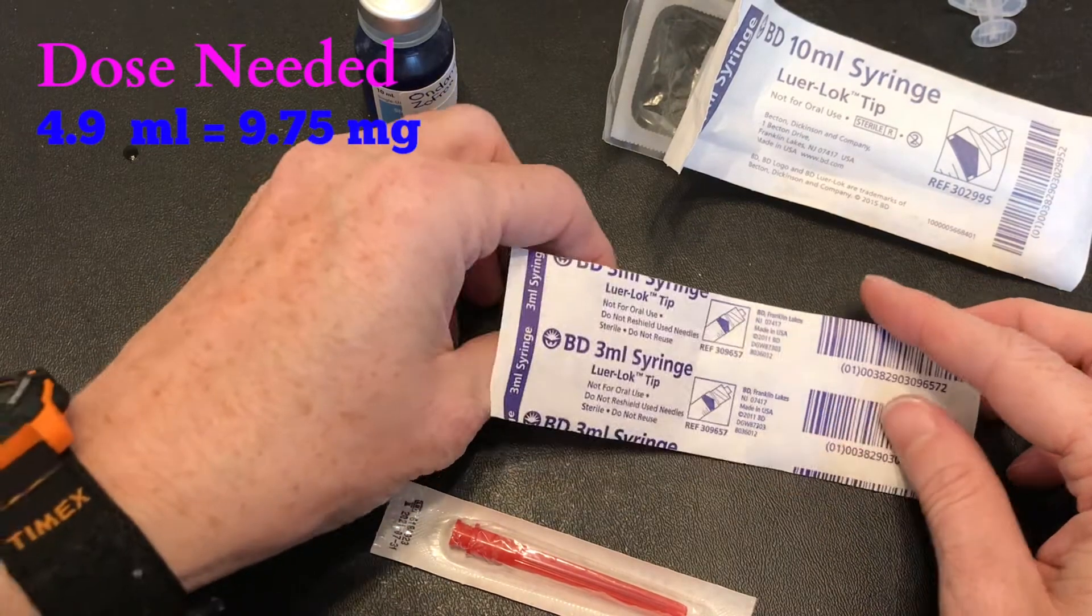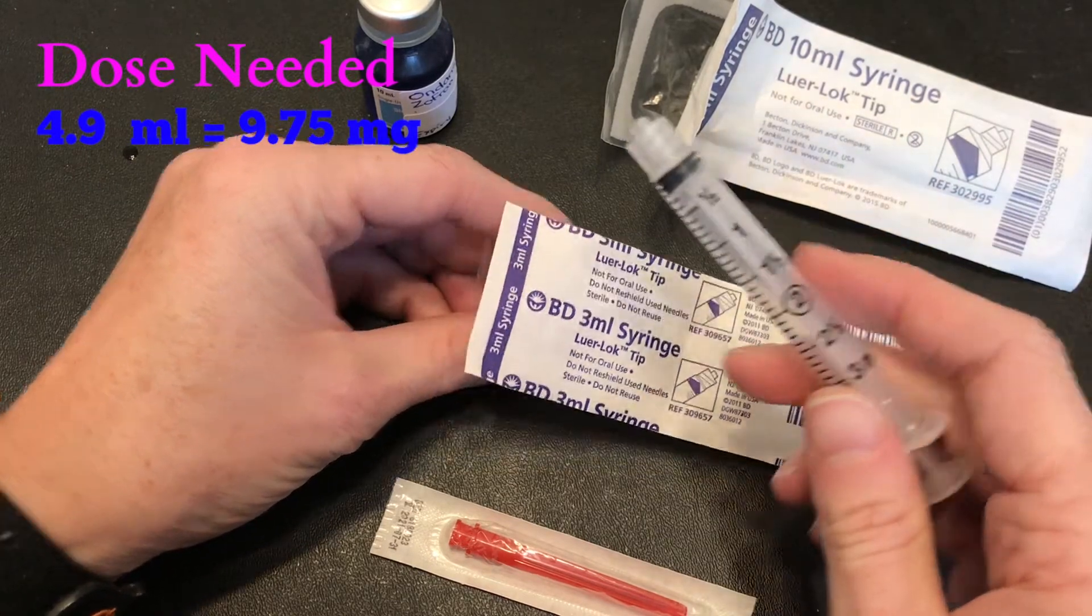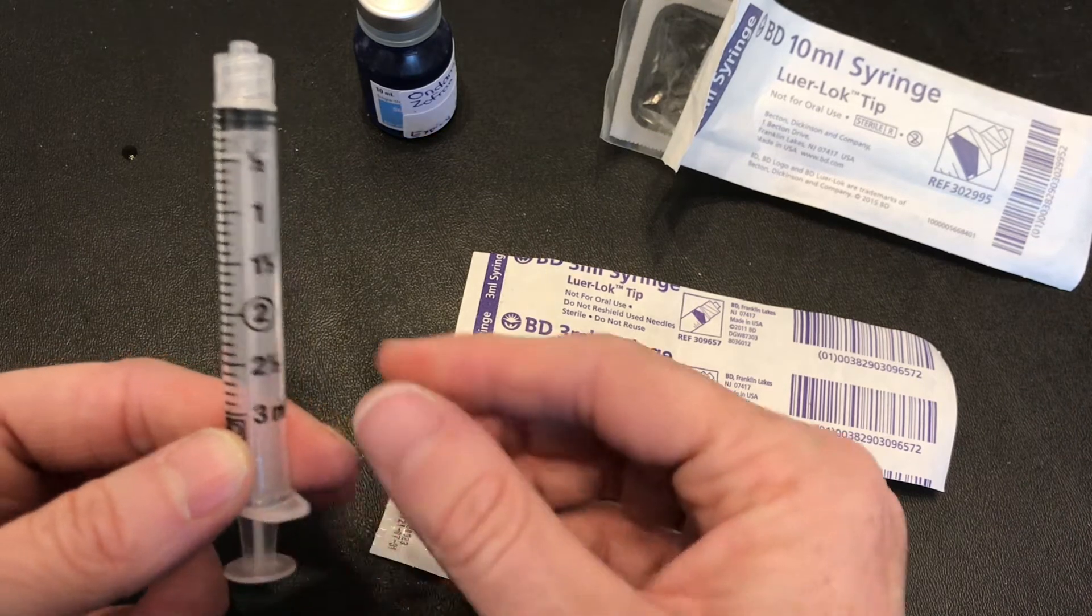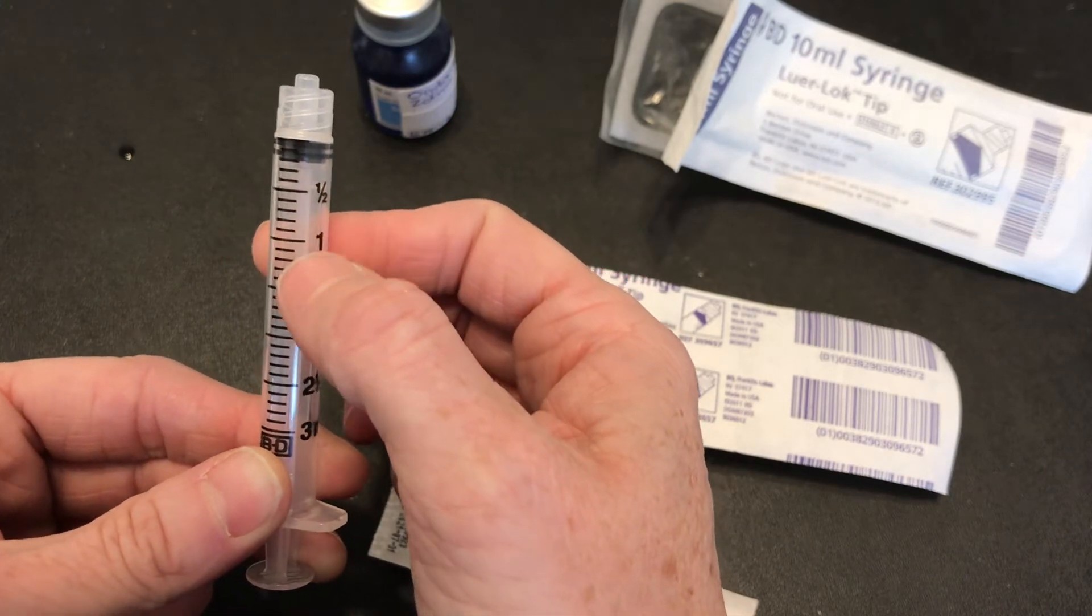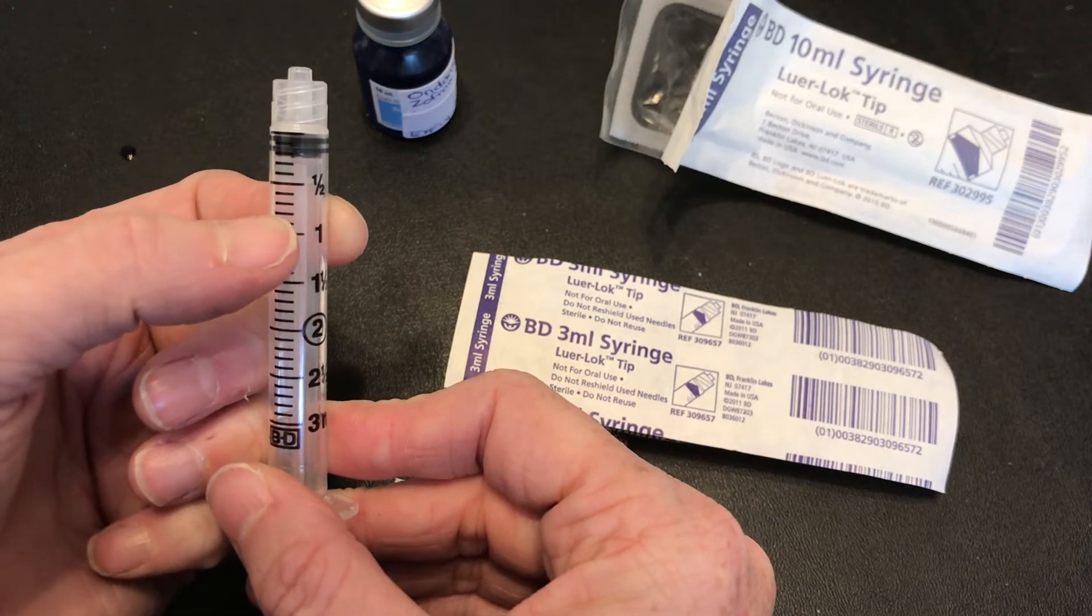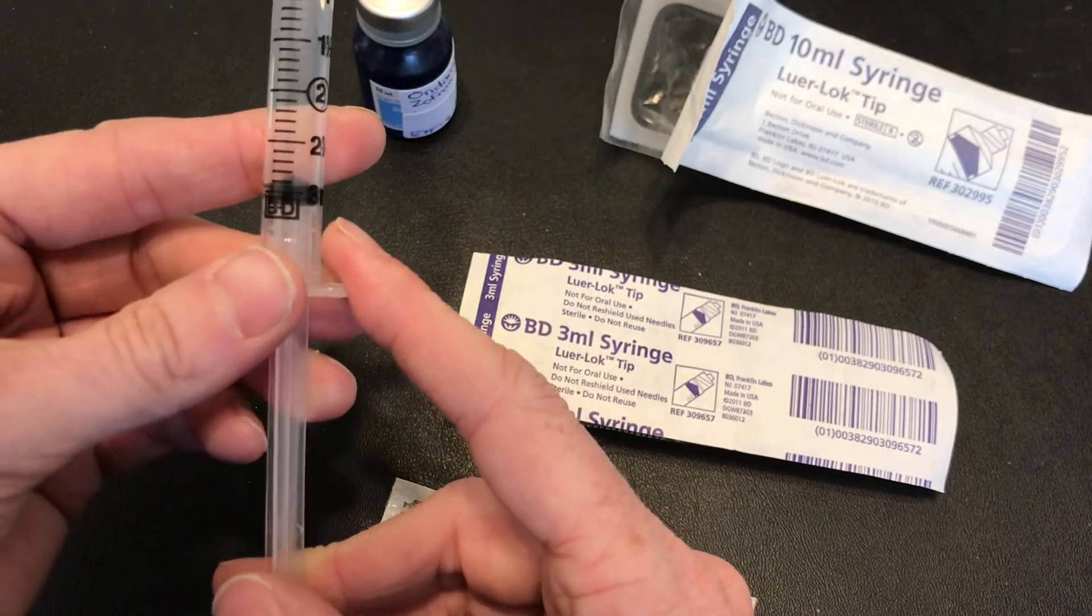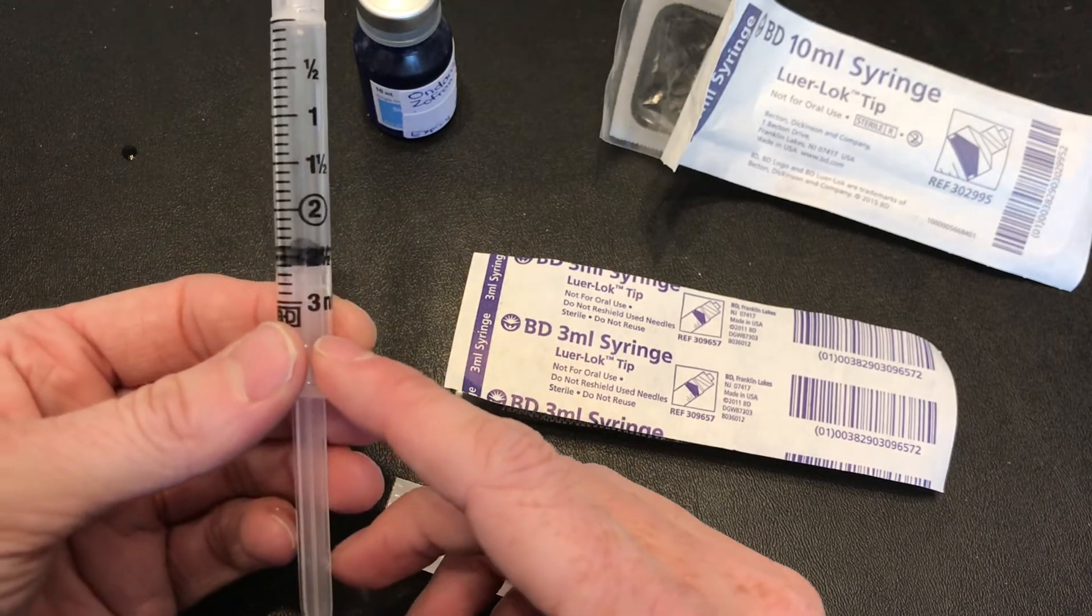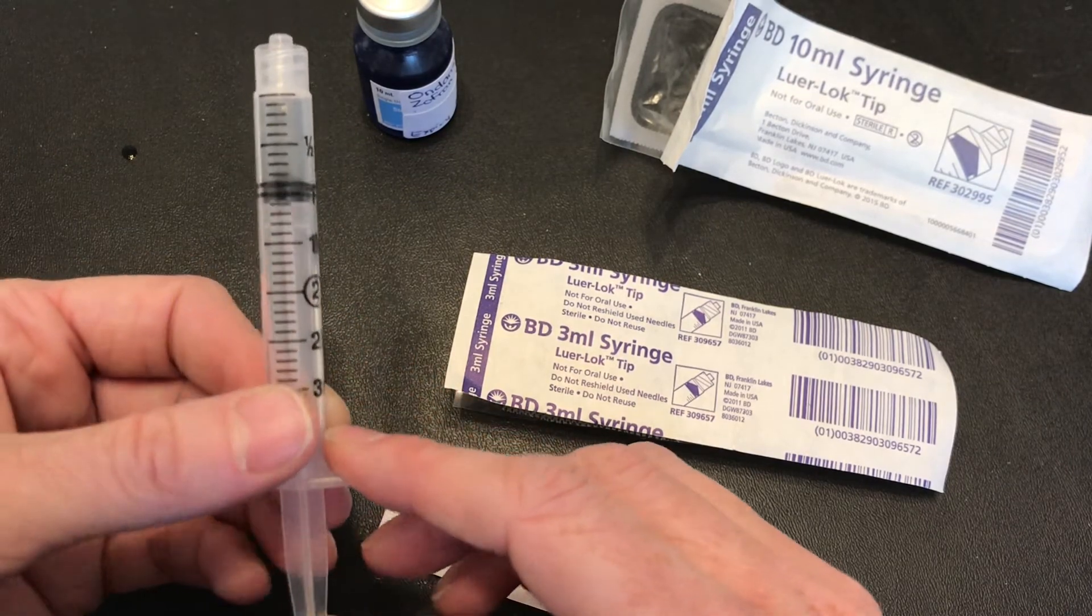Now I know with a 3 ml I'm looking to draw up 4.9 ml so I'm gonna have to use two of these to get the dose that I need. When I'm looking at the 3 ml syringe I can see that I've got my 1 ml. I have a half a ml which means that each line in between is a tenth of a ml. So this would be from one half to 0.6, 0.7, 0.8, 0.9, 1 ml. So if I draw up three in this syringe I would need to still draw 1.9 in my other syringe and I can accurately get to 1.9 with this equipment so I'm gonna choose to use two 3 mls.